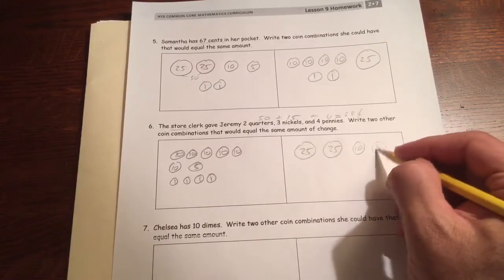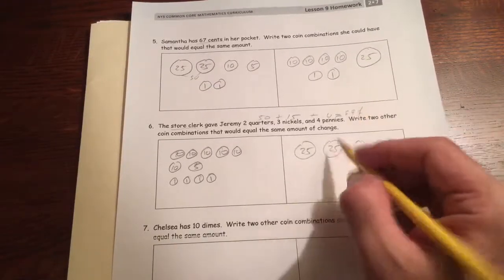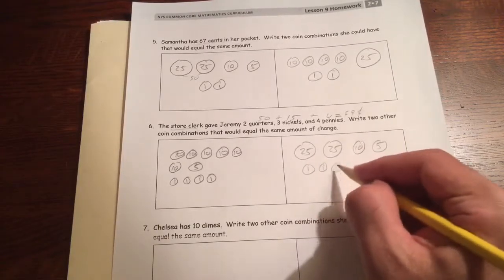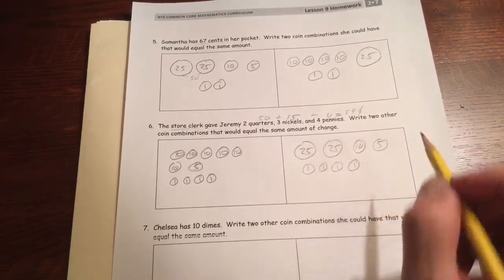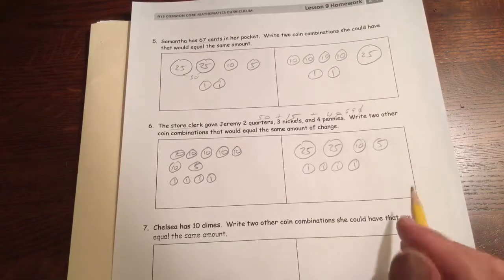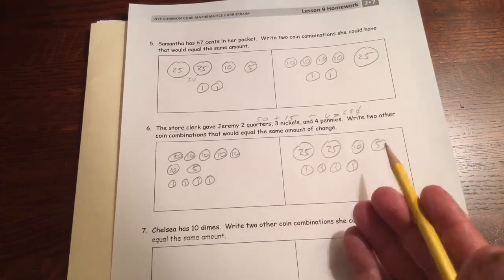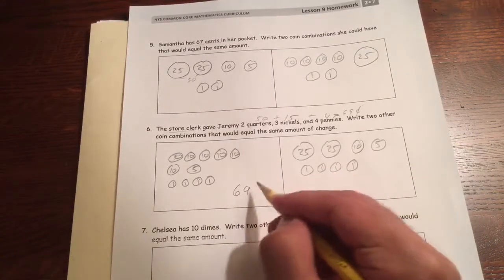And a nickel for 65. And then 66, 67, 68, 69. There's no getting around those four pennies. You're going to have to use those somehow. So there's two different ways to get the 69 cents.